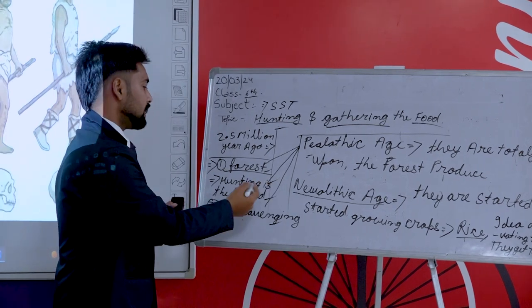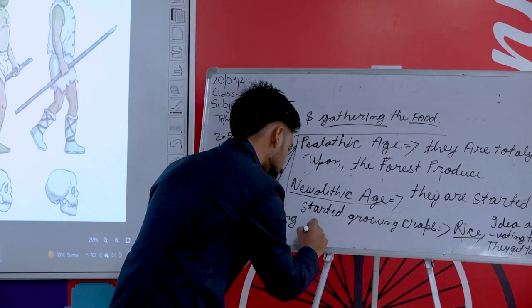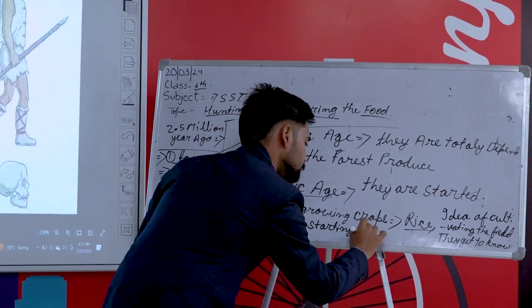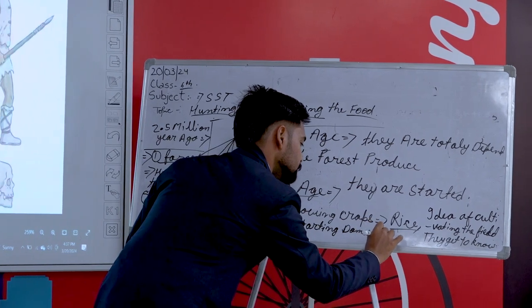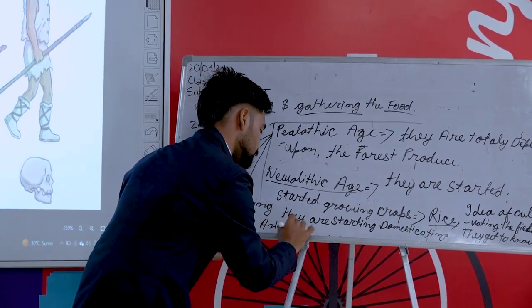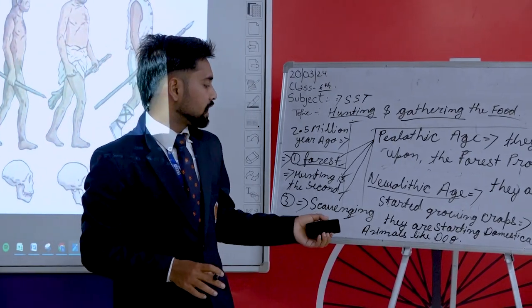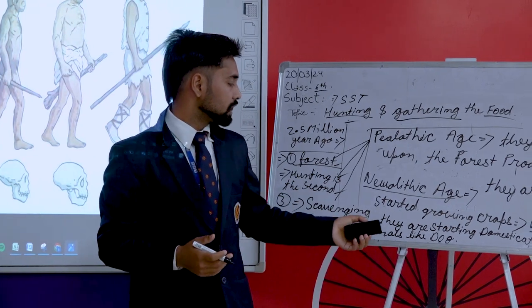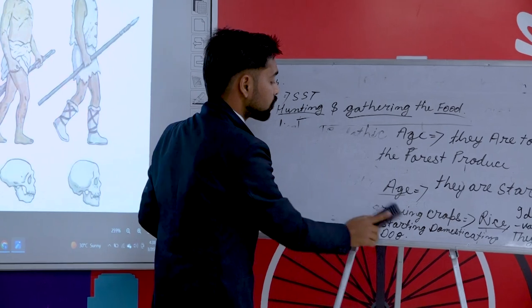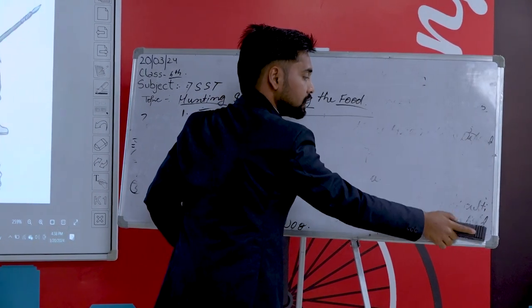In the Paleolithic age they were totally dependent upon the forest. But in the Neolithic age they started domesticating animals, such as dogs. After starting to domesticate animals, they kept domestic animals such as dogs. If we talk about the way they lived, we can see a lot of difference between the Neolithic age and the Paleolithic age. The people of the Paleolithic age started living nearby the river.